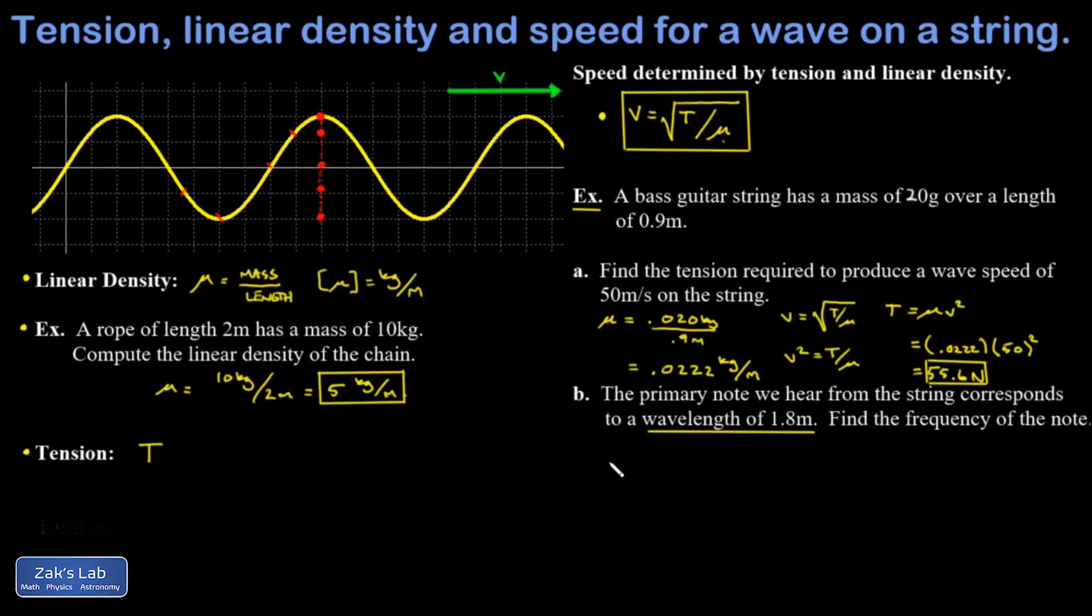So this is going back to the wave speed equation where we relate the frequency, wavelength, and speed. And in this case, I know the speed, 50 meters per second. I know the wavelength. And when I solve for f, I'm going to get a frequency in 1 over seconds or hertz.